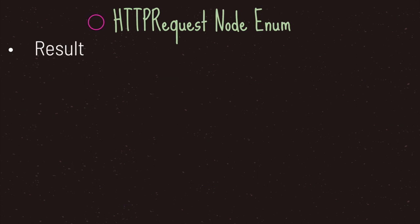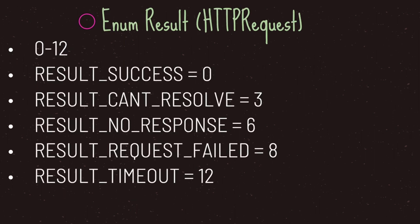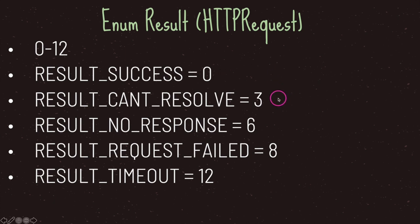Let's move on to HTTP request node enumeration types. The HTTP request node comes with only one enumeration type called result. The result enumeration type comes with 13 different options. The one you will most likely be familiar with is integer value zero, which means that a request has been received and properly responded to. If a server cannot be connected to, you will receive integer value three, which is result can't resolve.